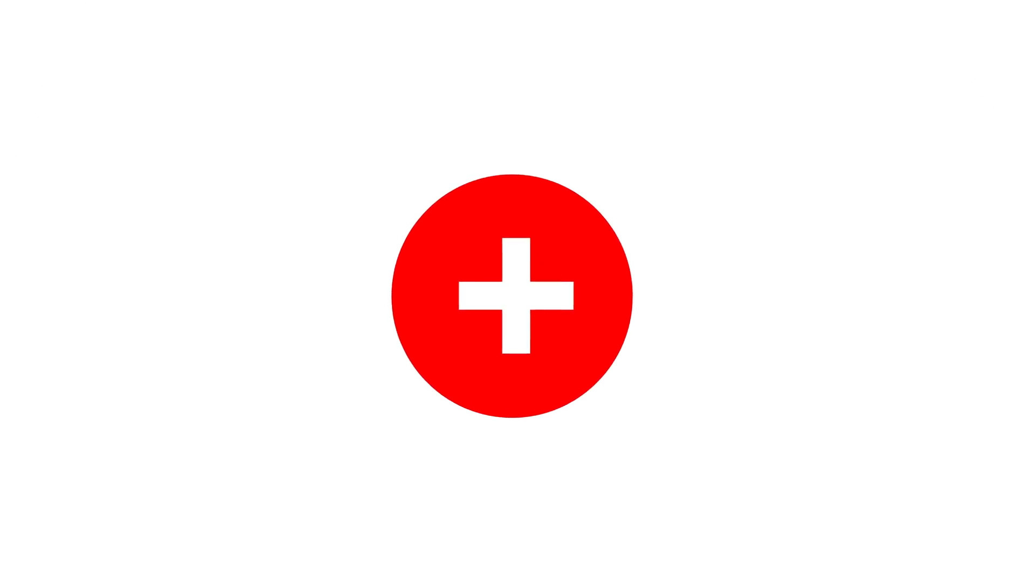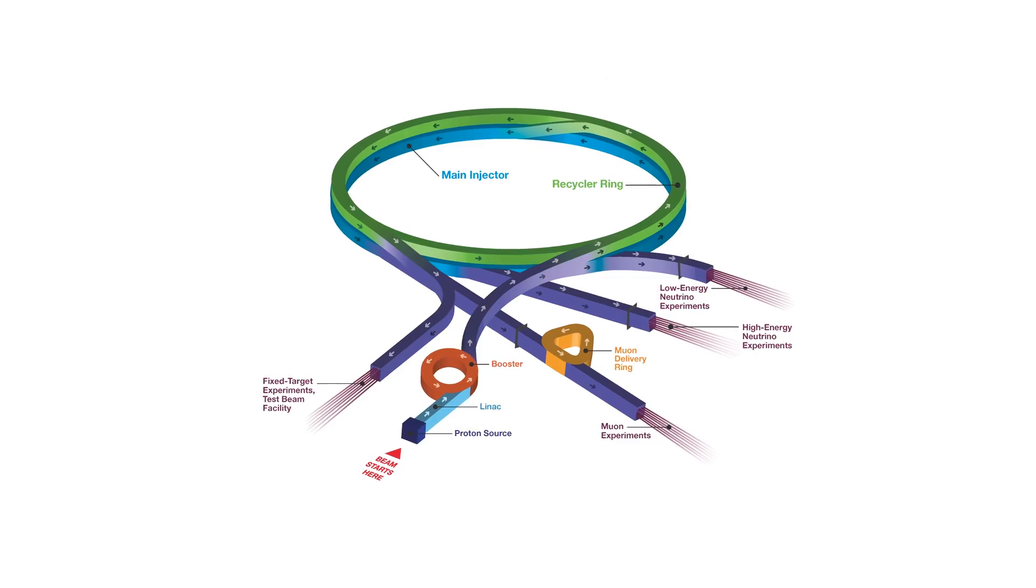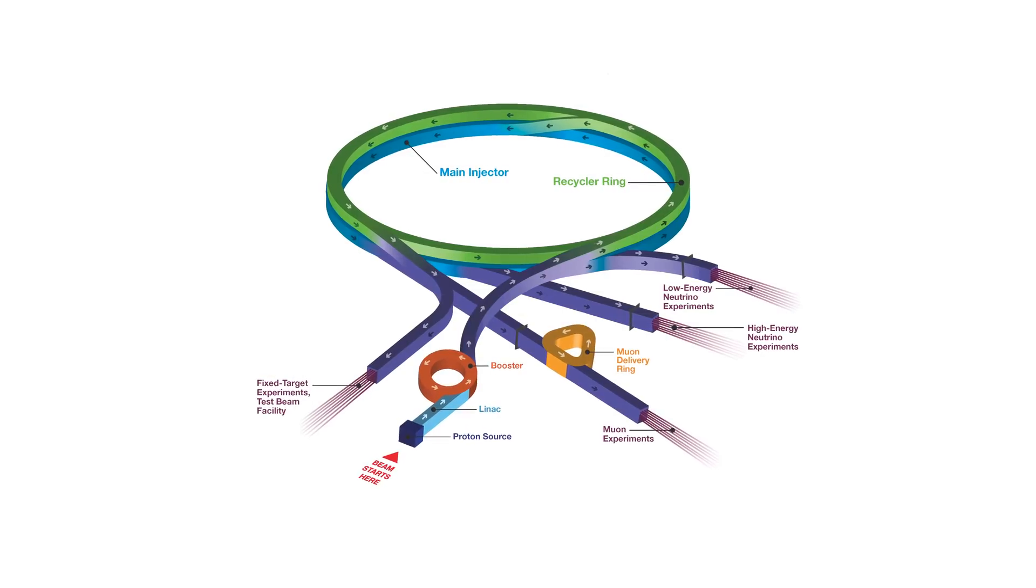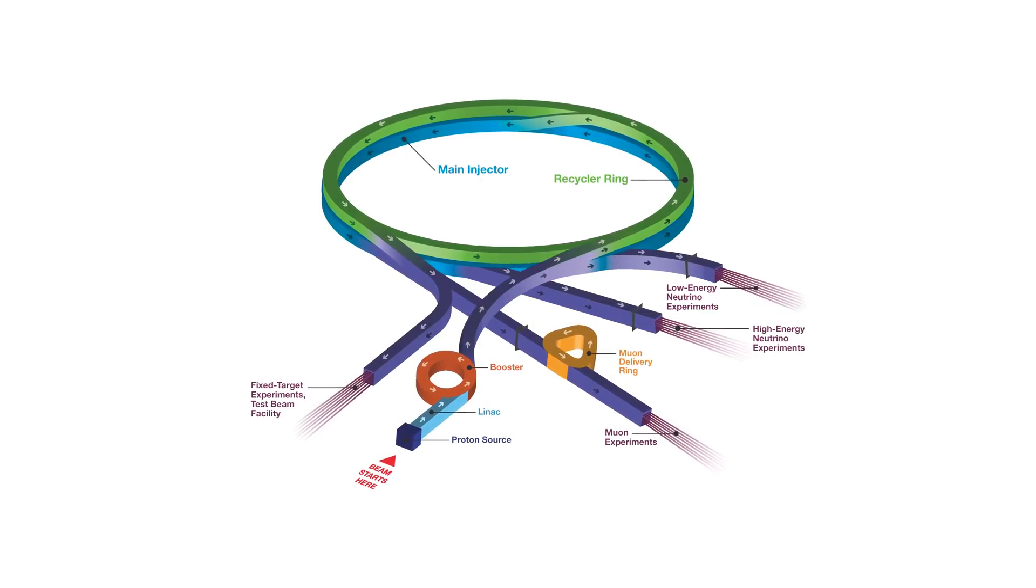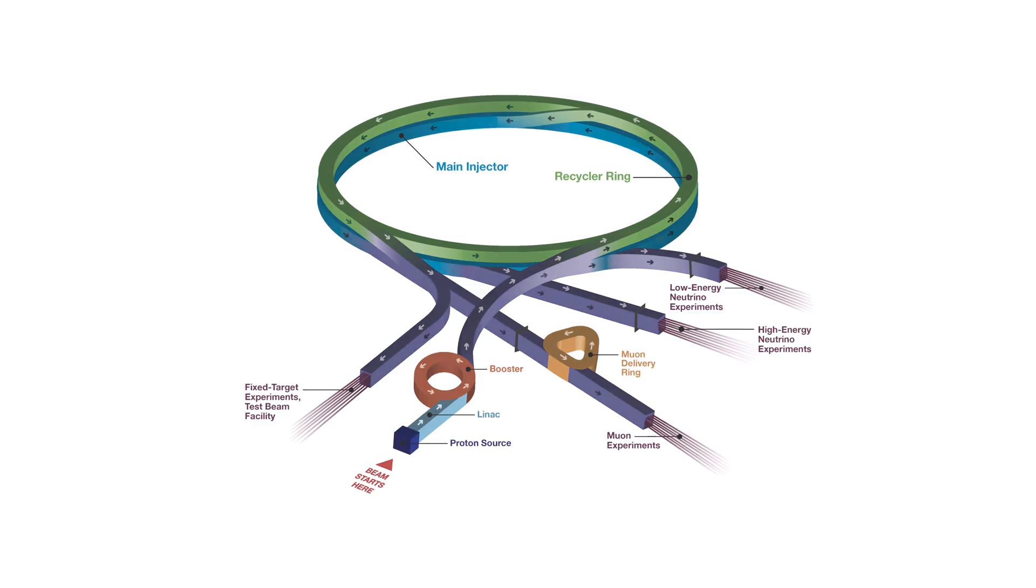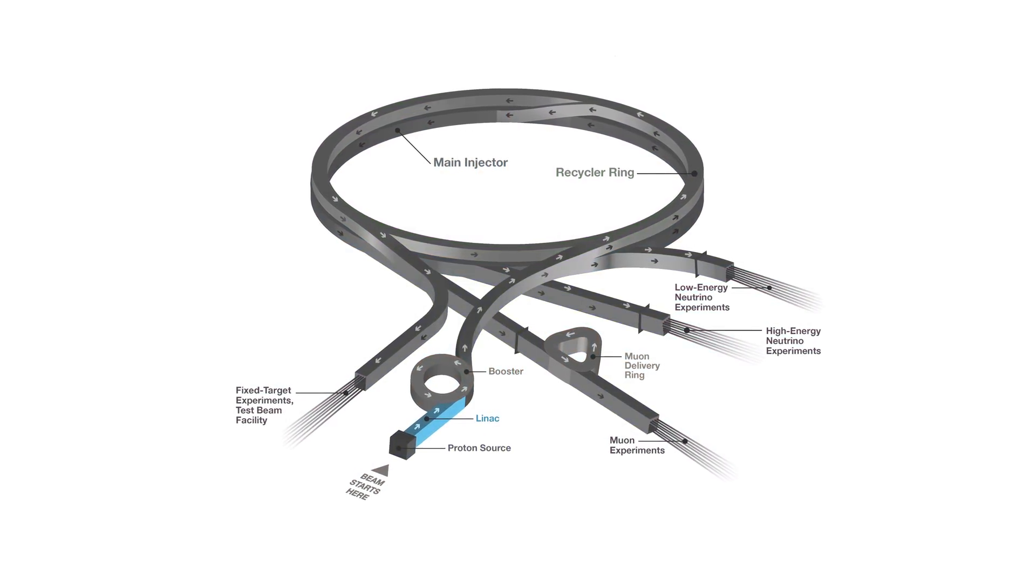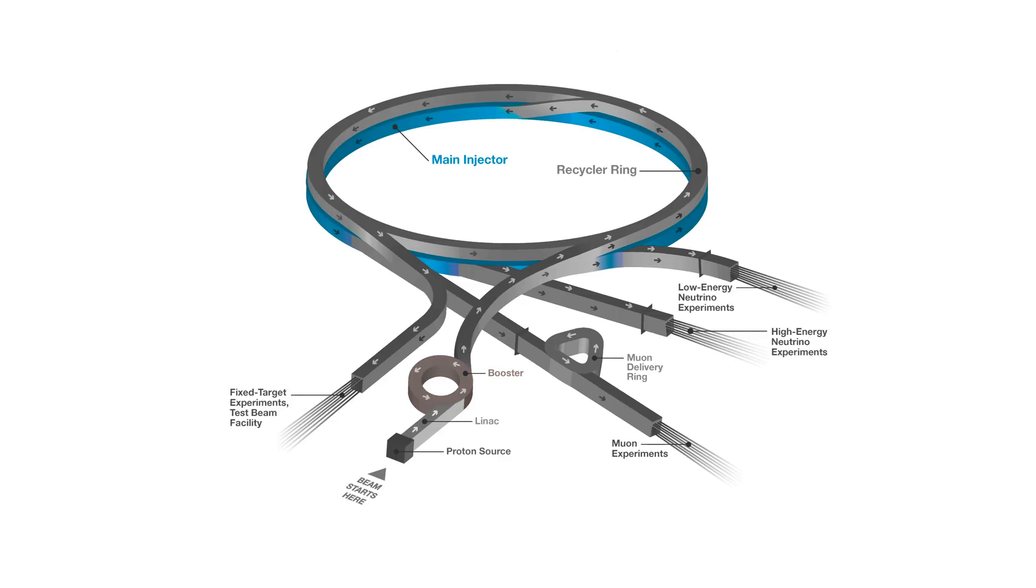We then use our accelerator complex to accelerate them to very high energies. Fermilab's accelerator complex consists of several distinct accelerators. We have the proton source, a linear accelerator, then the booster and finally the main injector.